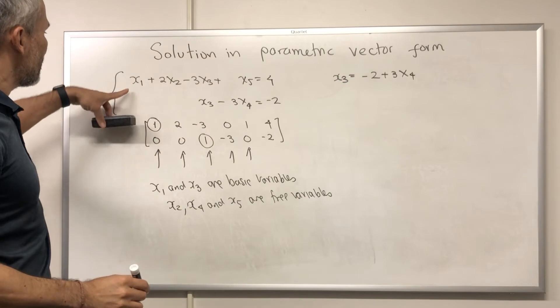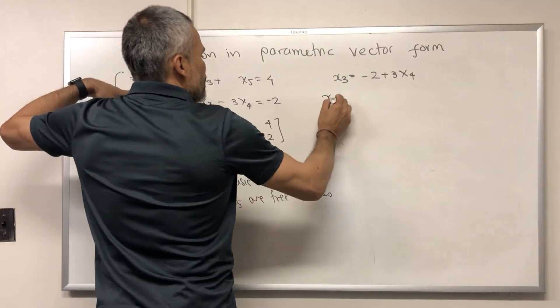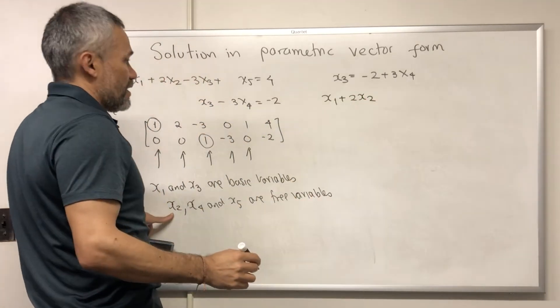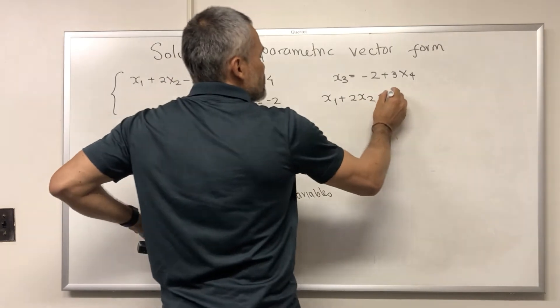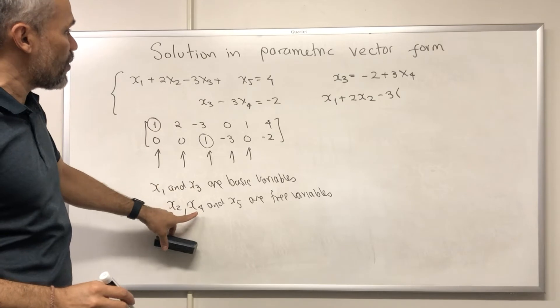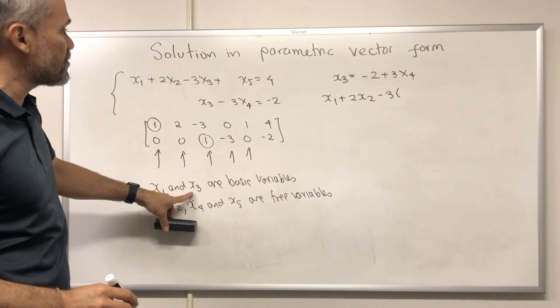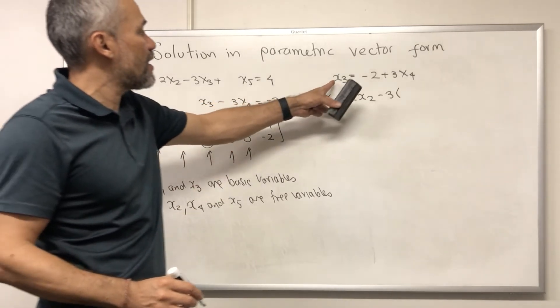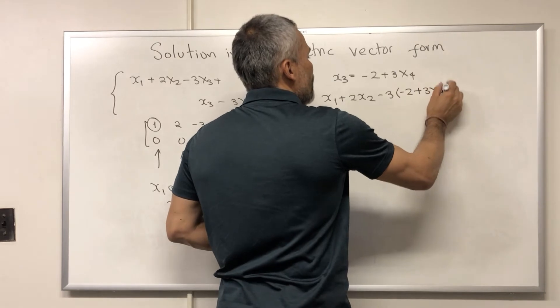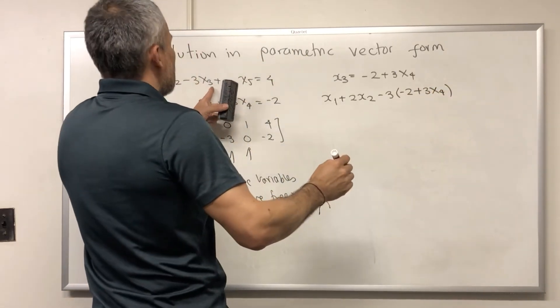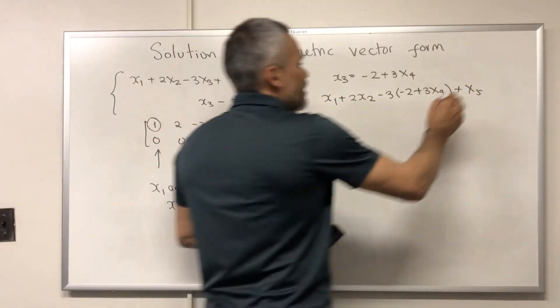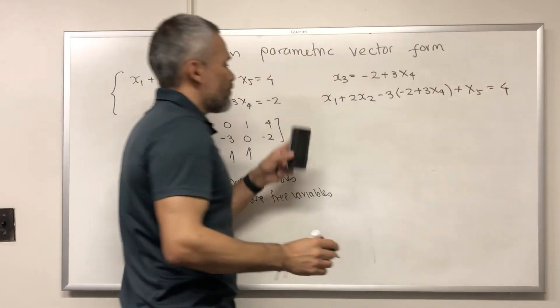And now the other basic variable here. We have that x1 plus 2x2, x2 is okay to have because it's a free variable, minus 3 times x3. x3 cannot be in the answer because we want to express x1 in terms of the free variables. x3 is not free. But then we have this expression that allows us to write x3 as negative 2 plus 3x4. And then plus x5. x5 is okay because it's a free variable. Equal to 4.